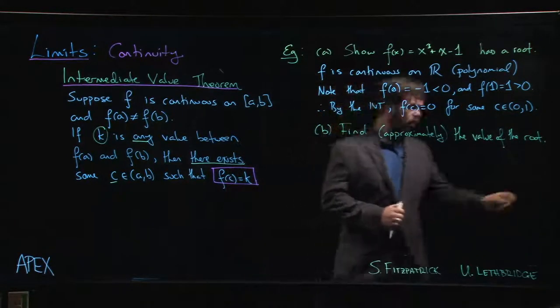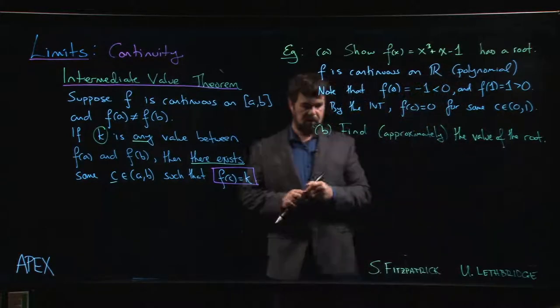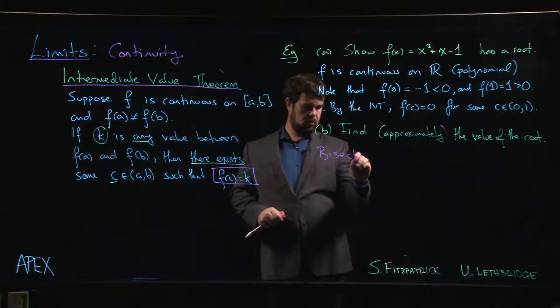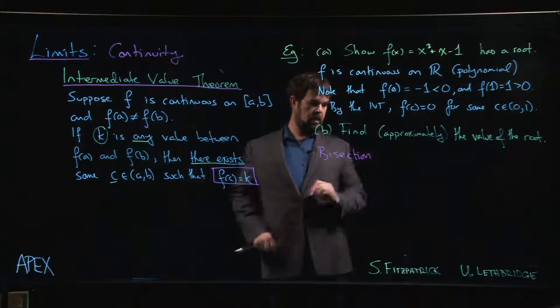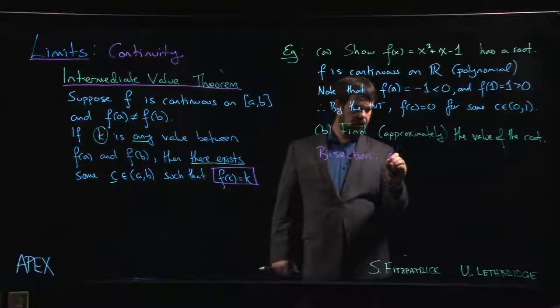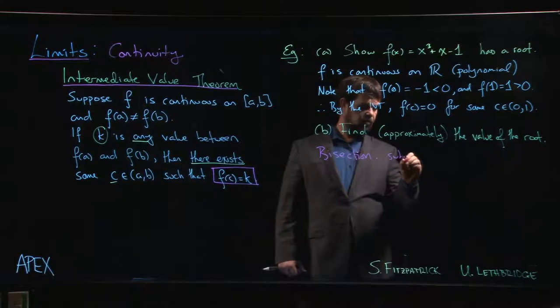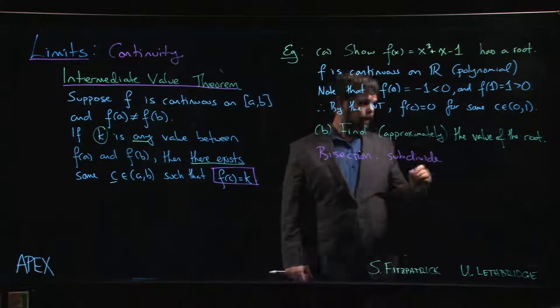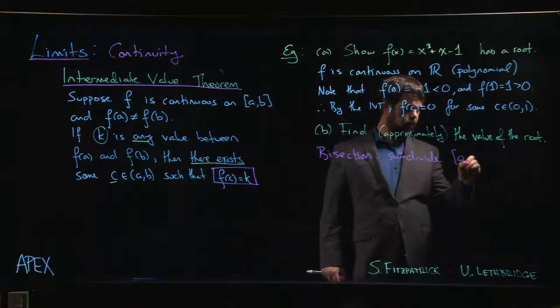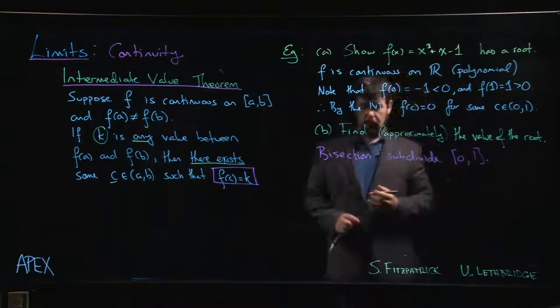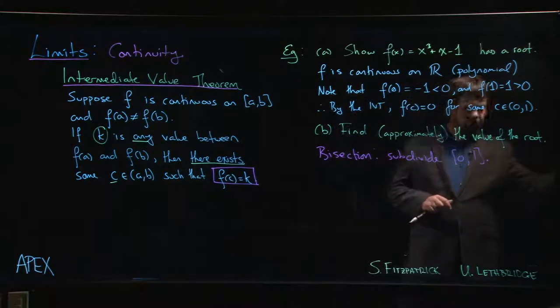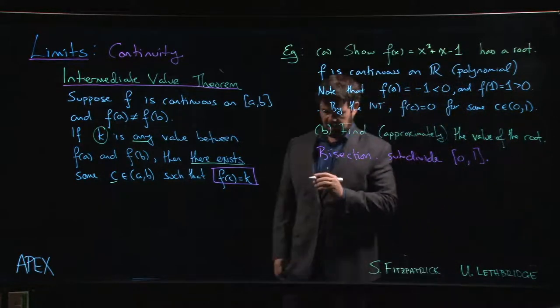So how can you get a better approximation for the value of the root? You use what's called the bisection method. And the bisection method says that what you should do is just continually subdivide the interval that we're working on. In this case, zero to one. We split the difference.